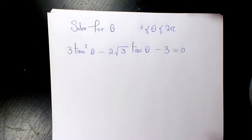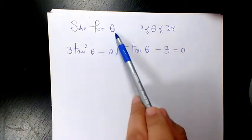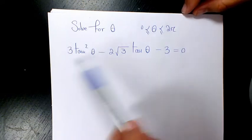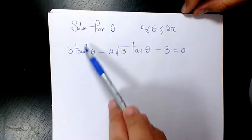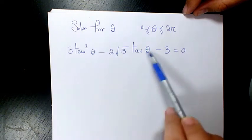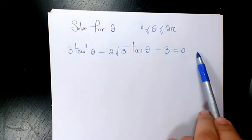What's up guys, this is Bassey, welcome to another video. In this video I want to show you how to solve this trigonometric equation and I want to solve it for theta, where theta is between zero and two pi. The equation is three tan squared theta minus two root three tan theta minus three equals zero.